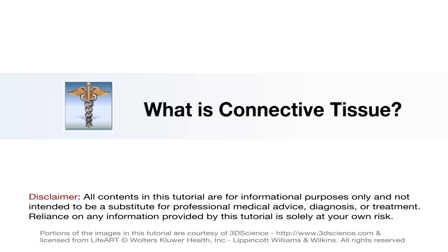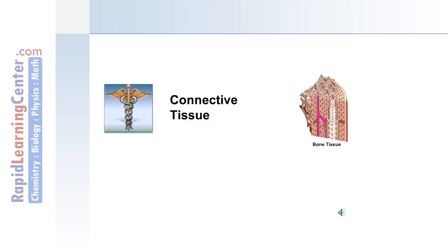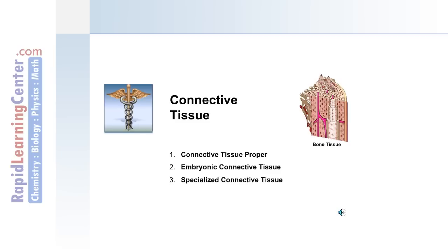Now we'll move on to discuss each of the four main tissue types in the human body, beginning with connective tissue. In this section we'll discuss the tissue proper, the connective tissue that's embryonic, as well as specialized connective tissue.